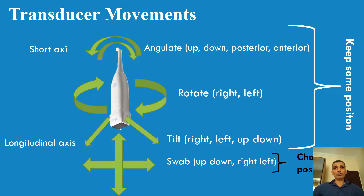There are certain movements you need to know when starting to do echos. Some movements keep the transducer in the same position; others move it from the spot. First, you can angulate in the short axis — right or left, up and down. Or you can angulate in the longitudinal axis of the transducer, sometimes called a tilt — right, left, up and down. You can also rotate: same position, clockwise or anticlockwise. Or you can swap — move the transducer in a direction, up and down, or even oblique.